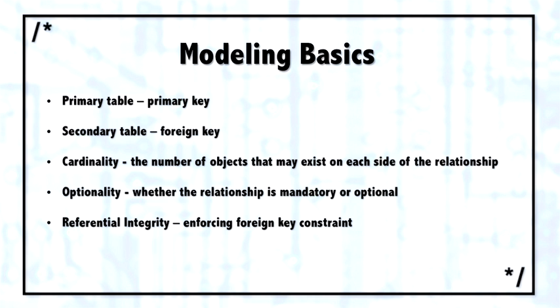Then there's referential integrity. Referential integrity, or RI, is often thought of as no orphans, meaning if there's a row in the secondary table with a foreign key, there has to be a row matching it with a primary key.